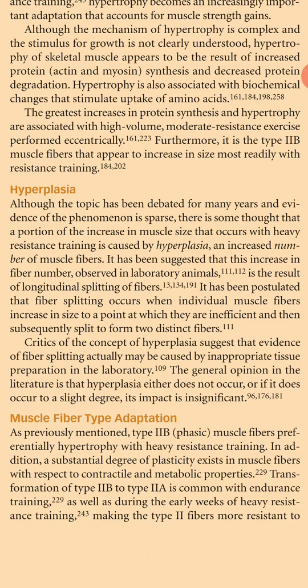The general opinion in the literature is that hyperplasia either does not occur or, if it does occur to a slight degree, its impact is insignificant. Regarding muscle fiber type adaptation, type 2b muscle fibers preferentially hypertrophy with heavy resistance training. In addition, a substantial degree of plasticity exists in muscle fibers with respect to contractile and metabolic properties. Transformation of type 2b to type 2a is common with endurance training as well as during the early weeks of heavy resistance training.